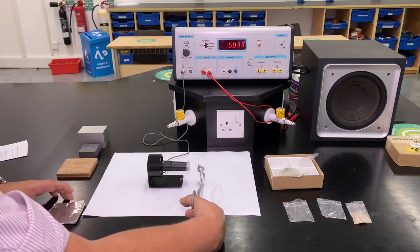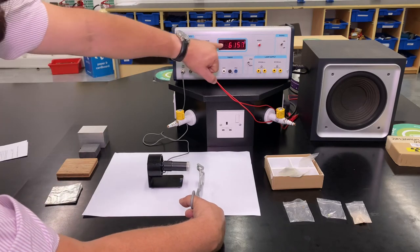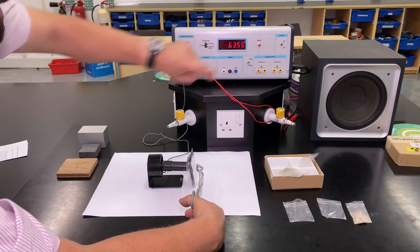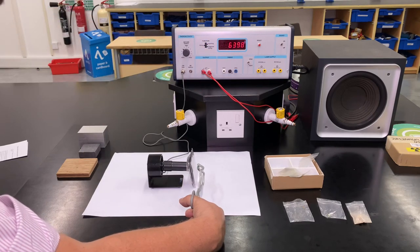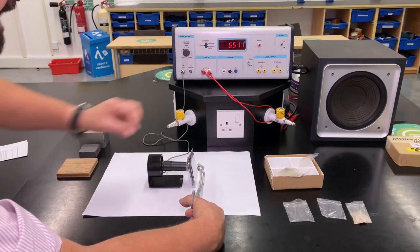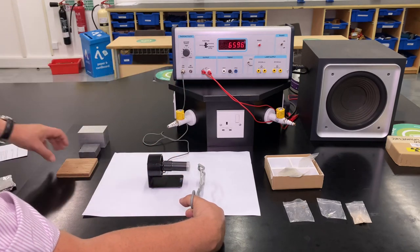...means that there's definitely some beta because the count rate is reducing, but there must be some gamma as well. Because with the aluminum there's still quite a considerable count rate. Although the count rate does drop—that's because it's now stopping the beta—there's still some gamma getting through.